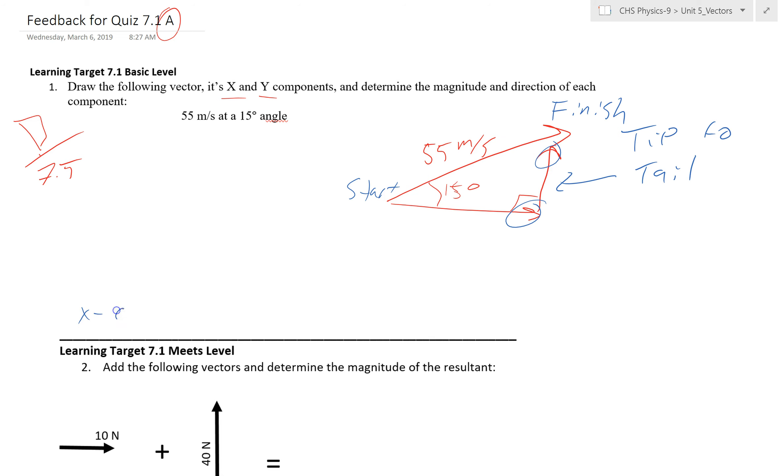For the x component, this is x, this is y. The x is just going to be the cosine of 15 degrees equals, if you think about cosine, it's the CA part of SOHCAHTOA, so adjacent over hypotenuse, which would be x over 55 meters per second. So then in the end, we end up with 55 times the cosine of 15 degrees. And then you should have gotten 53.1 meters per second for your answer for the x direction.